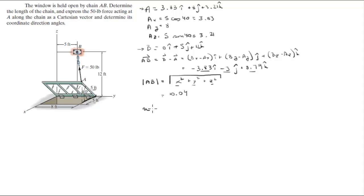You're going to find that the unit vector AB is equal to the vector AB divided by the magnitude AB, which is equal to 0.381i minus 0.299j plus 0.875k—almost the same numbers.